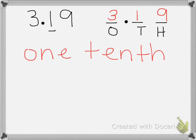If we want to write that using numbers, we need to write the number 1 tenth. So 1 needs to be in the tenths place, so we need a decimal point, a zero in our ones, and then the 1 in the tenths place. We don't need to have anything in the hundredths place to show 1 tenth.